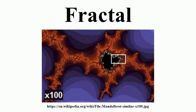Also in the last part of that century, Felix Klein and Henri Poincaré introduced a category of fractal that has come to be called self-inverse fractals. One of the next milestones came in 1904, when Helge von Koch, extending ideas of Poincaré and dissatisfied with Weierstrass's abstract and analytic definition, gave a more geometric definition including hand-drawn images of a similar function, which is now called the Koch snowflake.